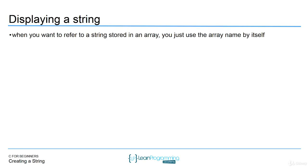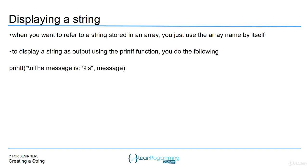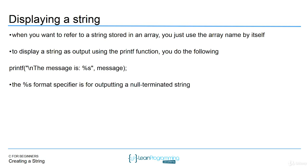As far as displaying a string as output, we're still going to use the printf function. When you want to refer to a string in your program, you just use the array name by itself — you don't have to specify indices, because specifying an index would give you a single character. If you want the entire string, just use the array name. Inside the printf format string, you would use %s as your format specifier and then just the name of the character array. The %s format specifier is for outputting a null-terminated string — remember we used %d for integers and %c for characters; for strings you use %s.